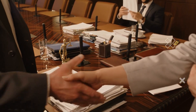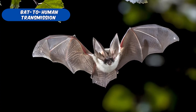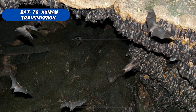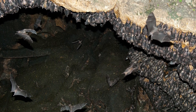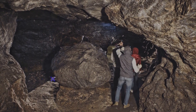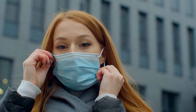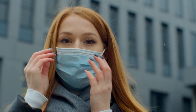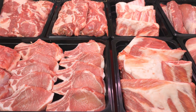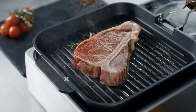Key risk reduction messages should focus on bat-to-human transmission. To reduce the risk from mines or caves inhabited by fruit bat colonies, individuals visiting or working in these areas should wear gloves, masks, and other protective clothing. During outbreaks, all animal products — blood and meat — should be thoroughly cooked before consumption.